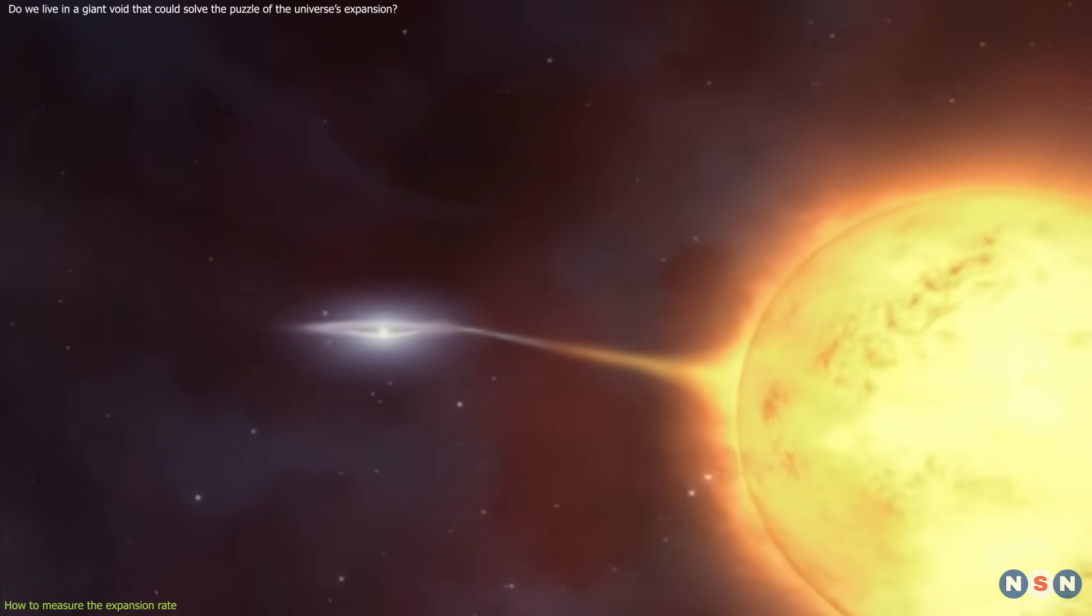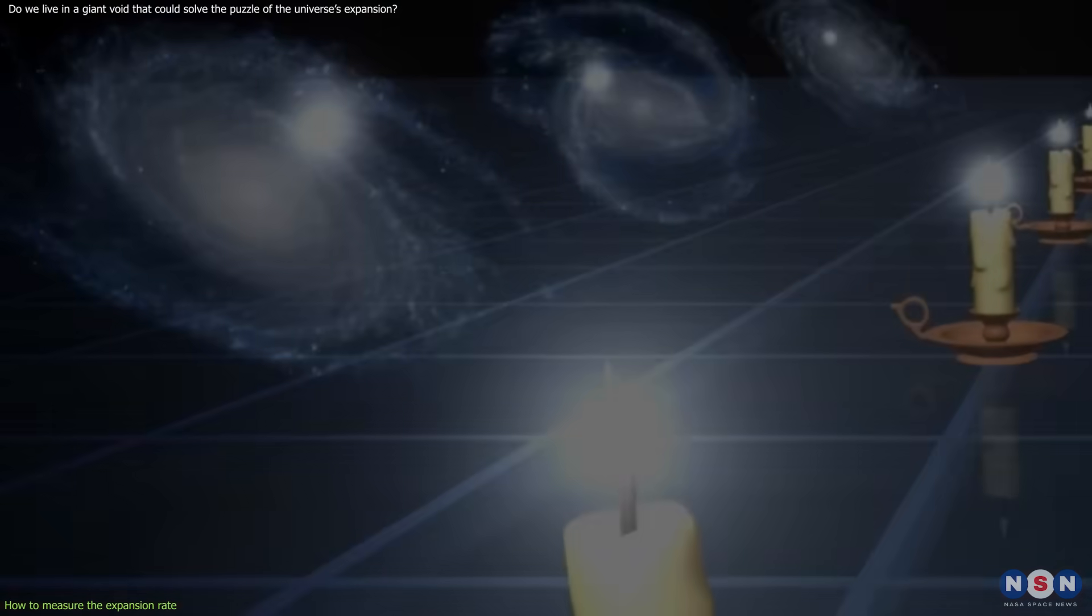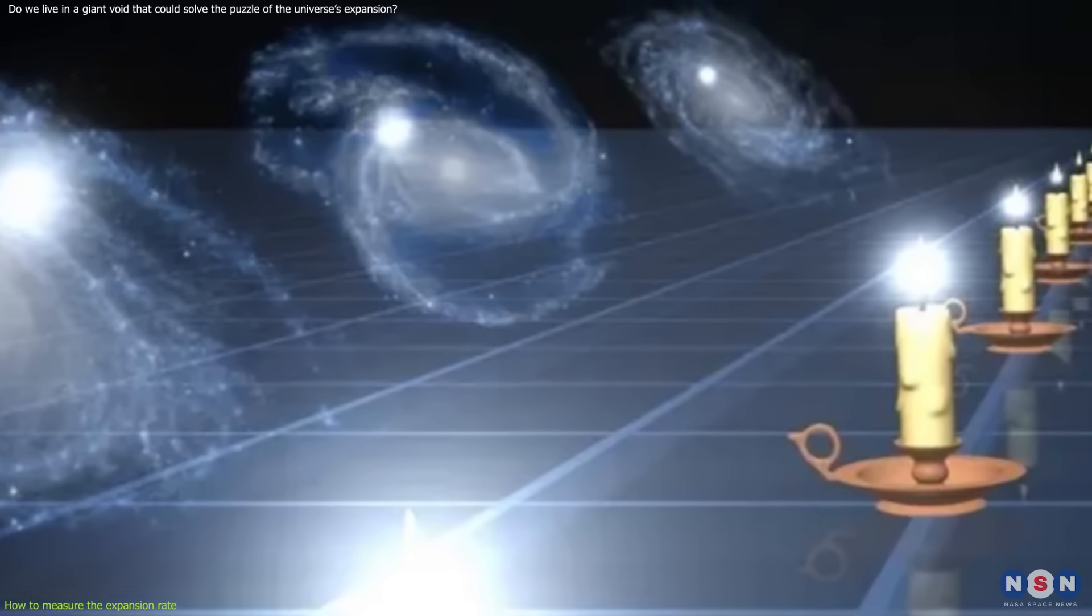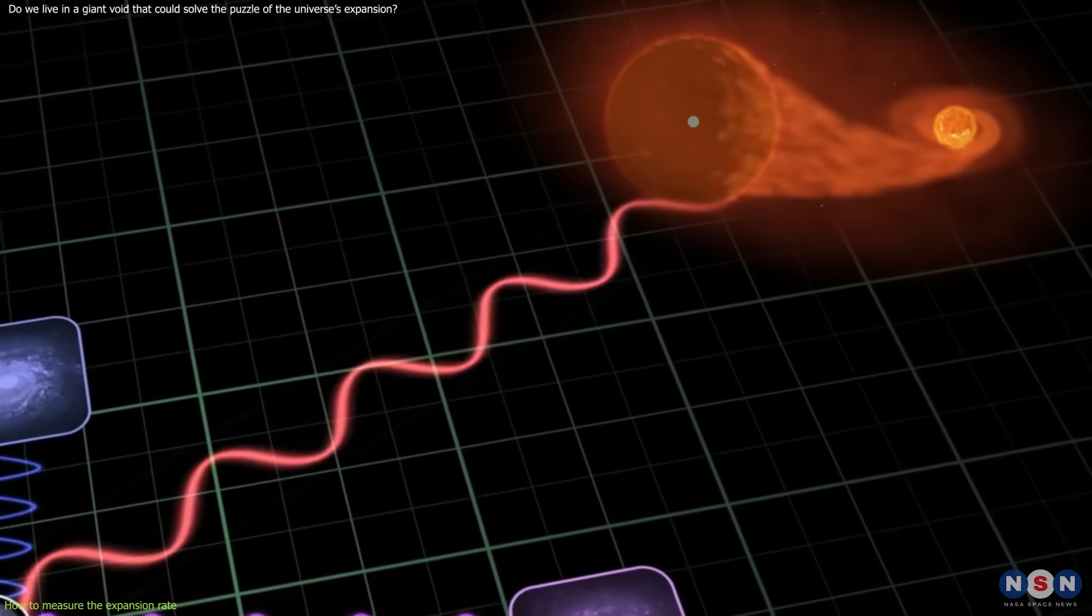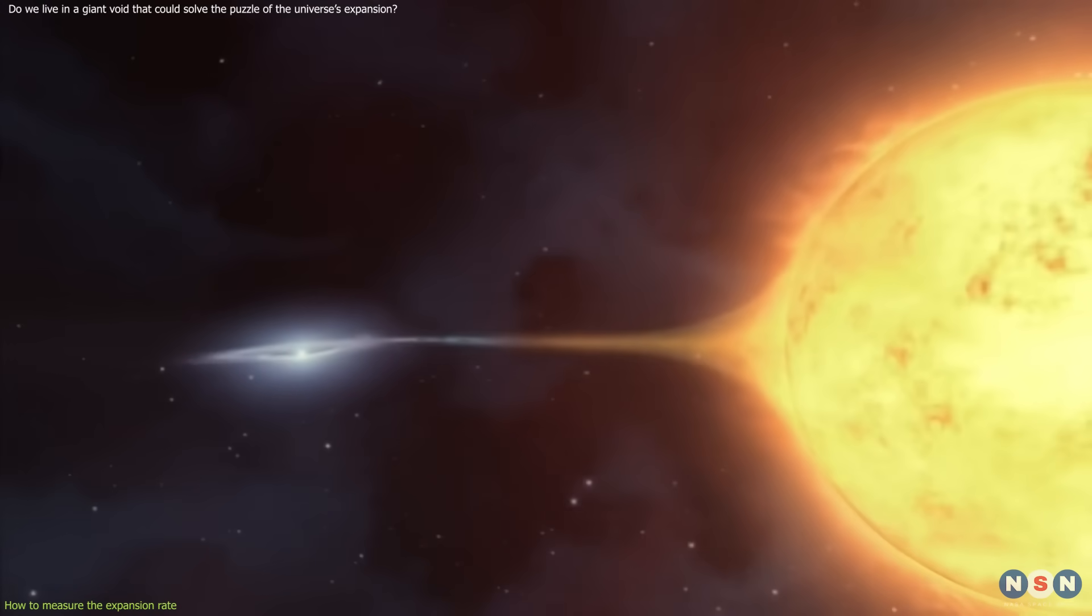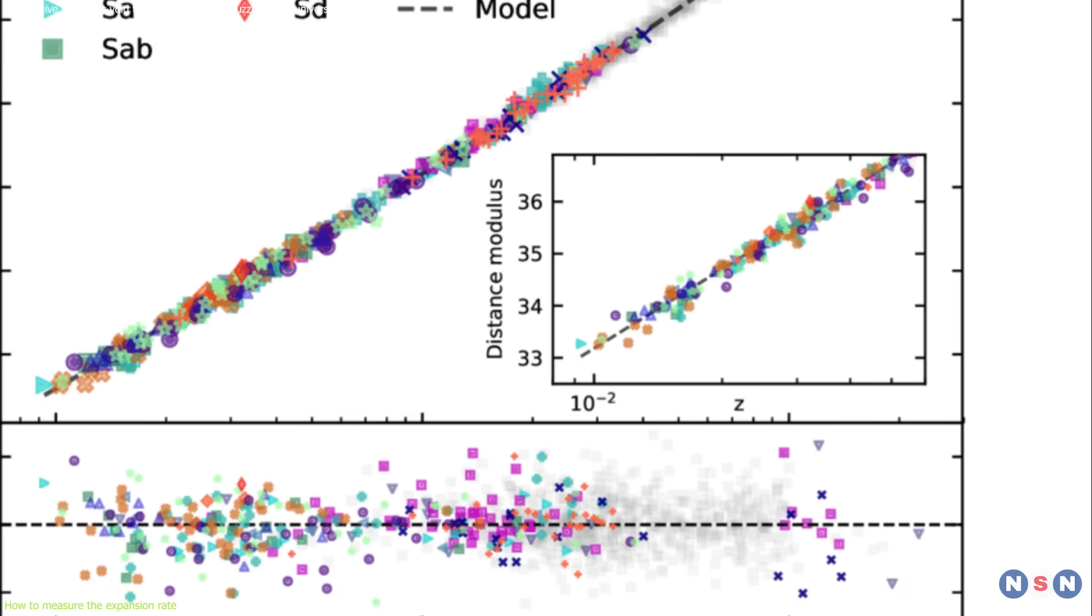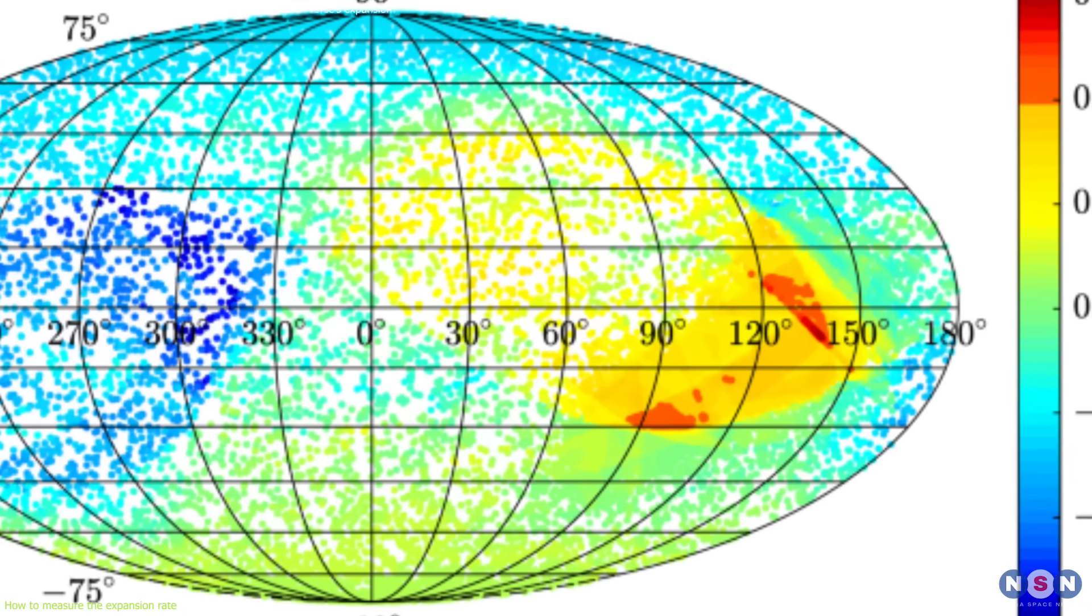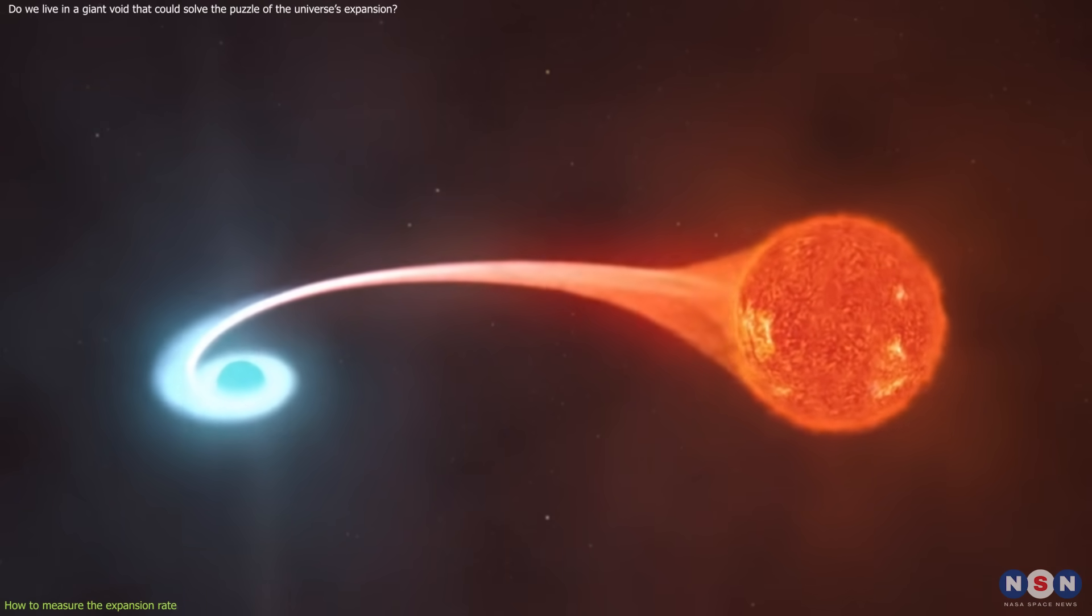Type Ia supernovae are exploding stars that have a very consistent brightness, which makes them ideal for measuring distances in the universe. By comparing the apparent brightness of a supernova with its intrinsic brightness, we can estimate how far away it is. And by measuring the redshift of its light, we can estimate how fast it is moving away from us. By combining the distance and the speed of many supernovae, we can calculate the Hubble constant. The Pantheon sample is the largest and most recent collection of Type Ia supernovae data, containing over 1,000 supernovae from different surveys.